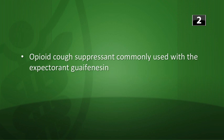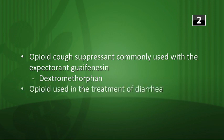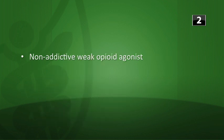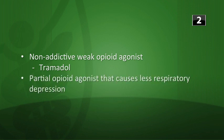Next question: which medication fits each of the following descriptions? Opioid cough suppressant commonly used with the expectorant guaifenesin — that's dextromethorphan, the DM in over-the-counter products like Robitussin DM. Opioid used in treatment of diarrhea — that's loperamide or diphenoxylate. Opioid receptor antagonist — that's naloxone or naltrexone.